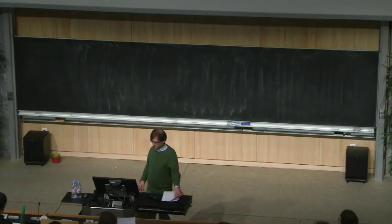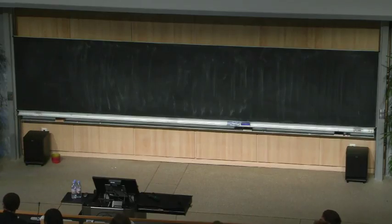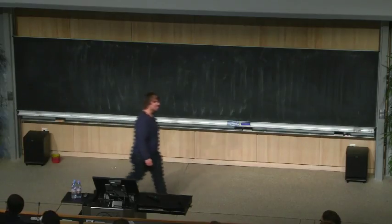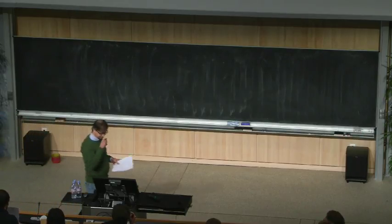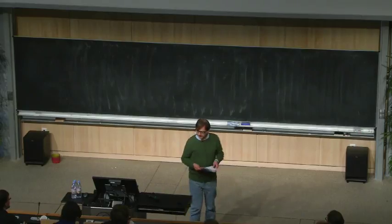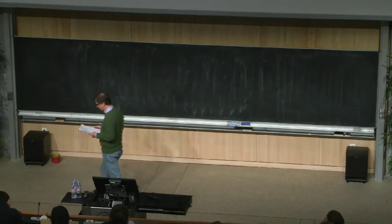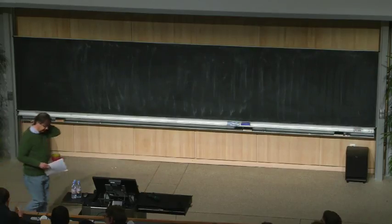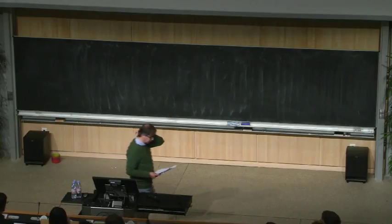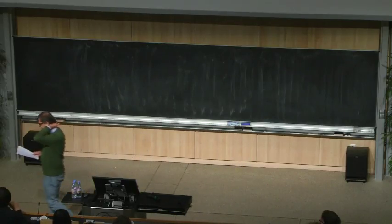We're very happy to have Alberto Zaffaroni from Milano for a set of lectures on supersymmetric localization and black hole microstate counting. Alberto has two hours, but we'll take a five-minute break after 55 minutes or so. Thank you very much for the invitation. In these four lectures, I will discuss essentially an application of localization to a counting problem — counting microstates of asymptotically AdS black holes. There will be a mixture of localization, which I will review briefly in the first lecture.